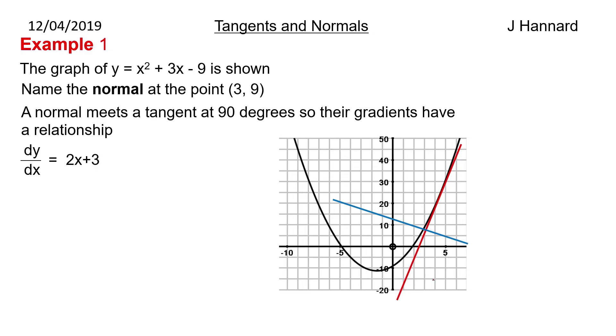So first we've got to find this gradient. dy/dx = 2x + 3 as before. We've got an x coordinate of 3, so we stick that in. We get the gradient of the tangent to be 9. But this normal is perpendicular to it, so we need to take the negative reciprocal of 9 to get the gradient of the normal. So it's going to be -1/9.